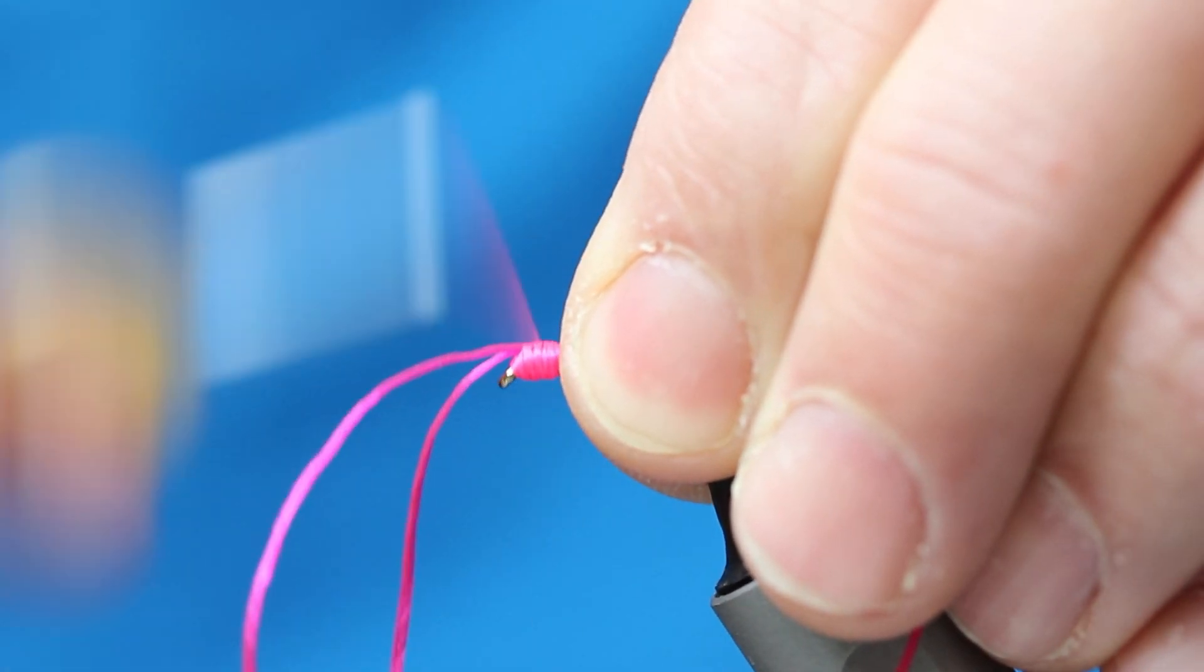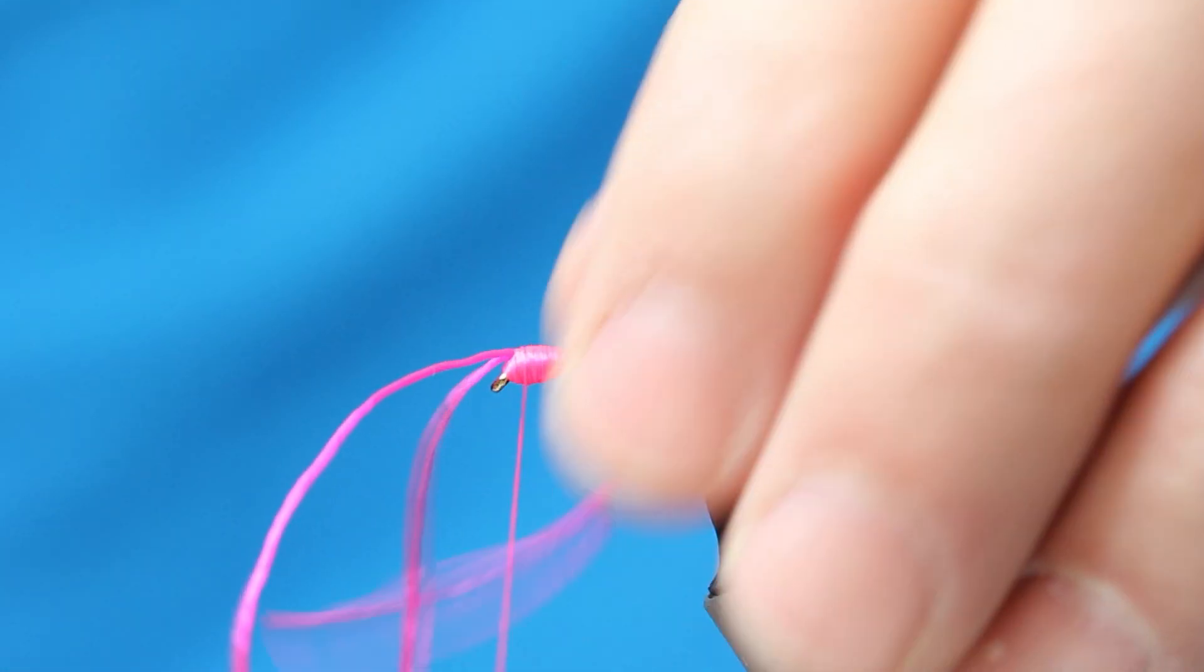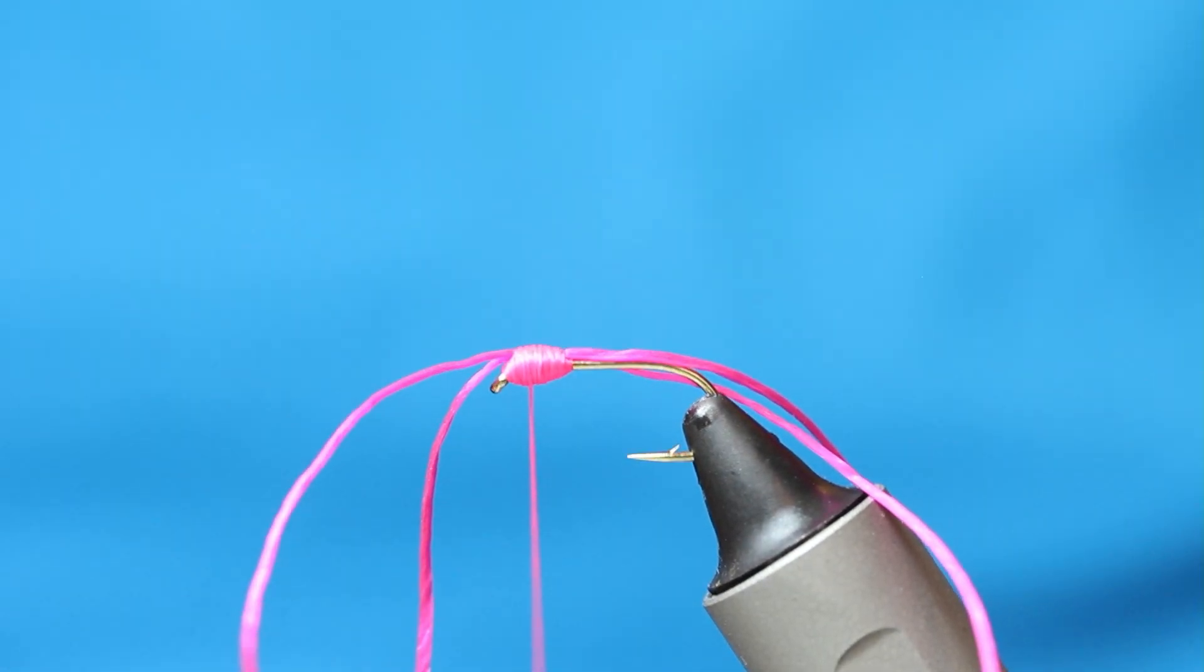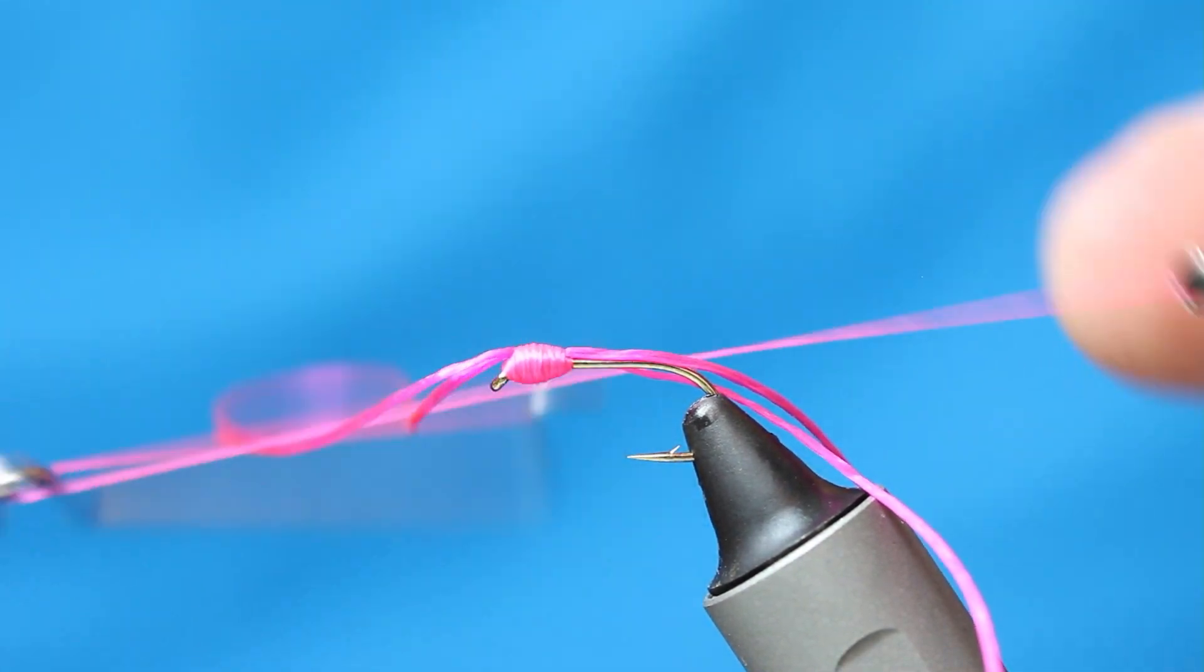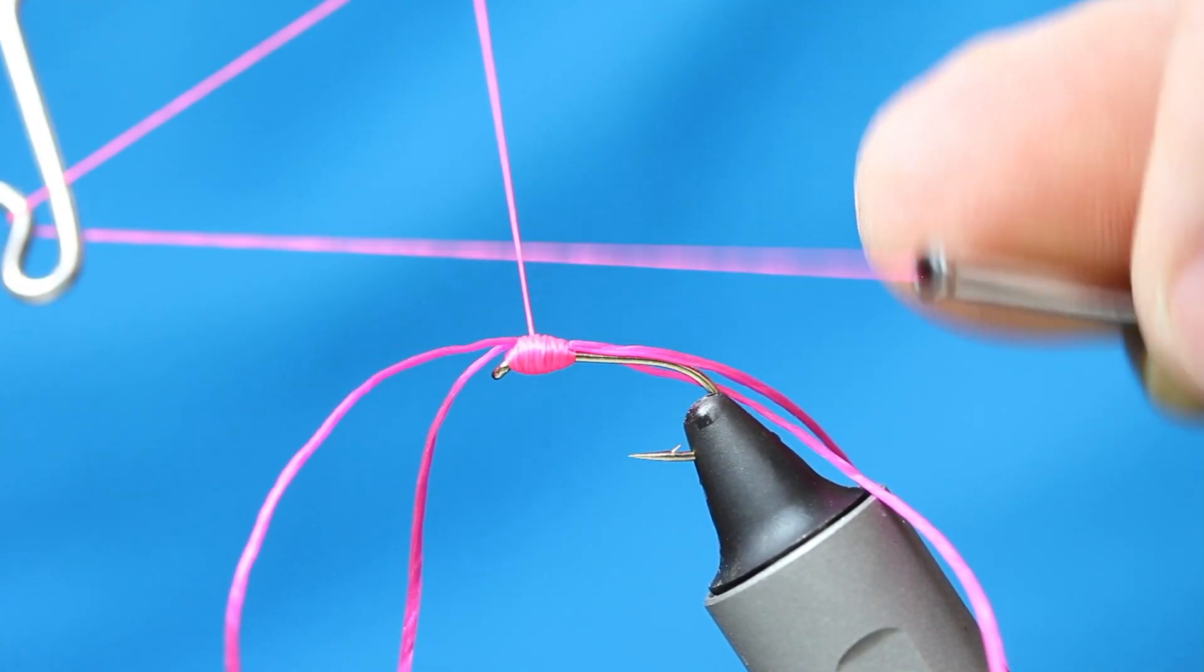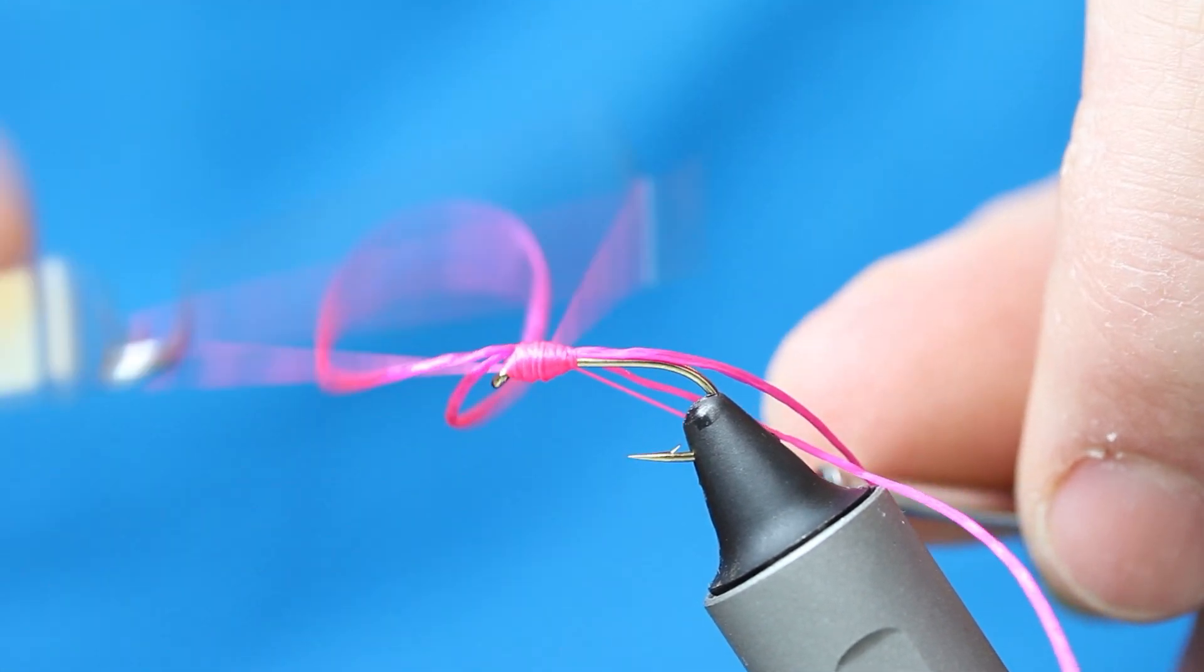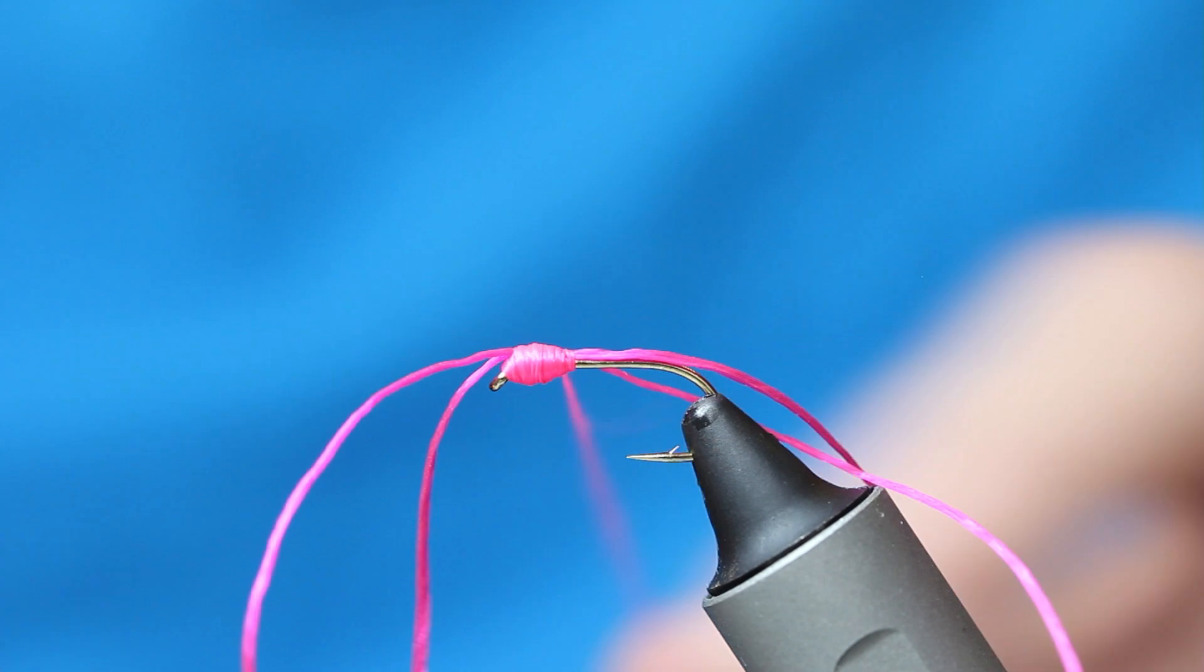It doesn't get much simpler than this really. Just a couple of materials. Now when you're dealing with this stuff, it'll want to wrap around the whip finishing tool. If you create a big enough triangle, see my triangle there? The bigger the triangle, the more it's going to fit through it. And it'll stop it getting tangled up there. And just finish that off inside there.